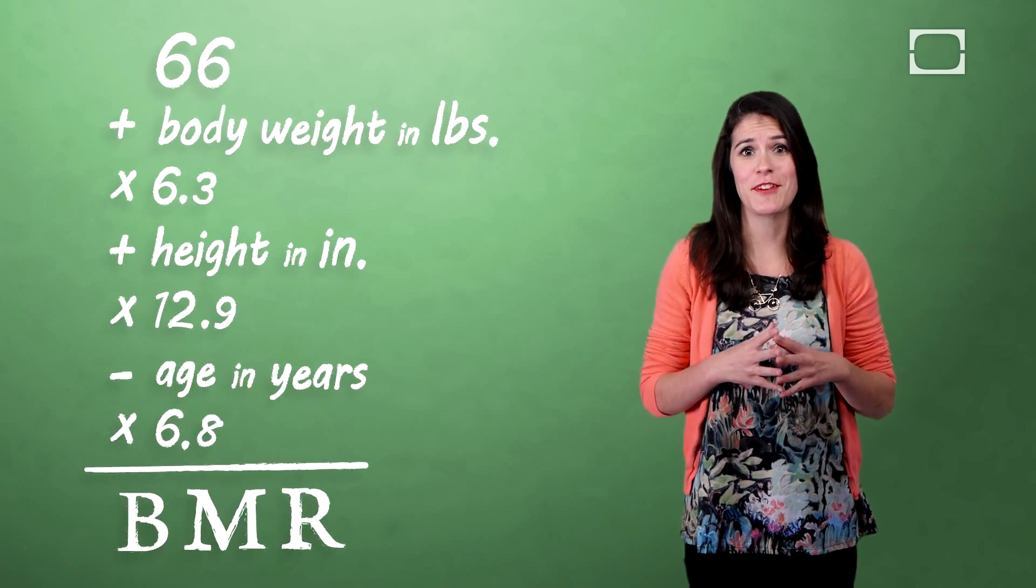Subtract in your age in years times 6.8, and that will give you your basal metabolic rate. If I lost you at 66, because I think I lost me at 66 too, you can just go online. There are a ton of different calculators that will automatically calculate your BMR for you. All you have to do is put in things like your gender, your height, and your weight. And boom, you've got it.